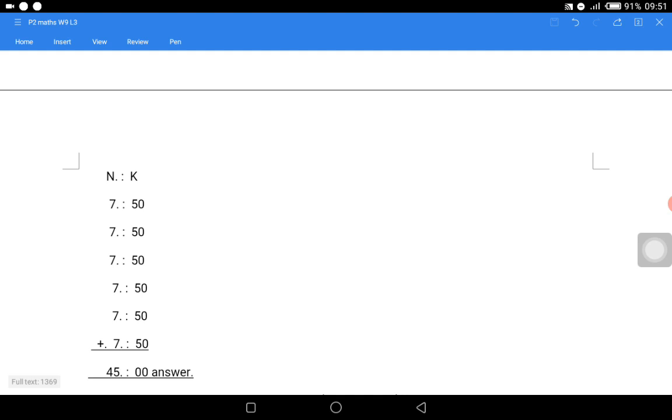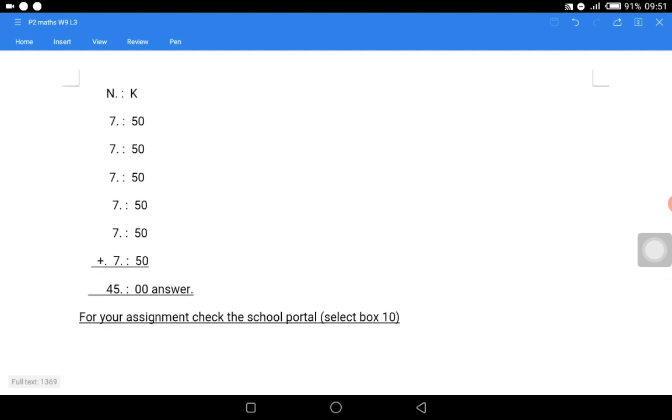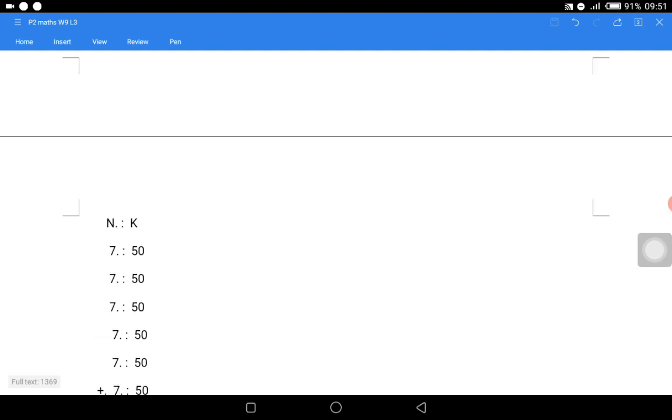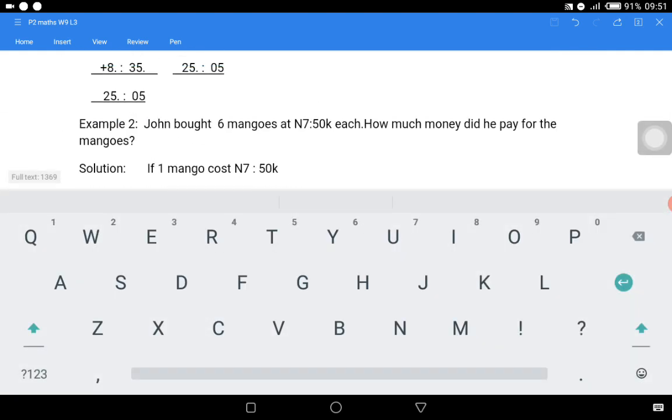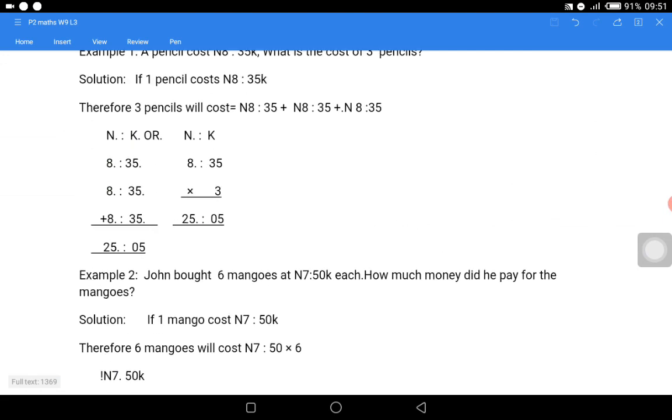N30.00k + N7.50k gives us N37.50k. N37.50k + N7.50k gives us N45.00k as our answer, which shows that the answer we arrived at under our multiplication method is correct.